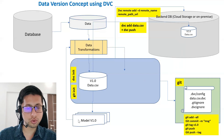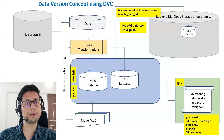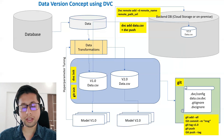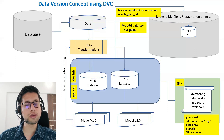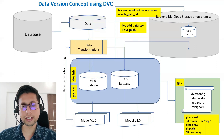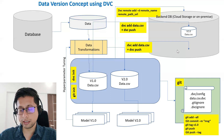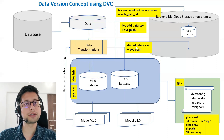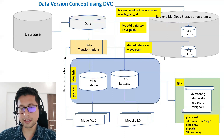Now the first version is maintained. We applied some fine tuning, did some data transformation, and got the next set of data — data version 2.0. We want to maintain this as well. We will again run dvc add data.csv because data.csv has been modified with certain transformations, and then dvc push. These sequential commands will push the actual file to the backend DB.